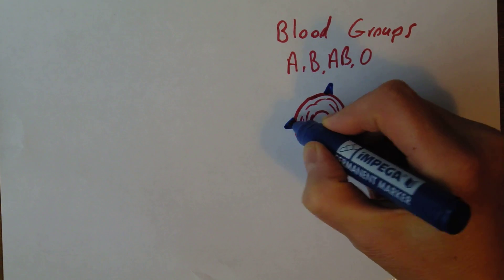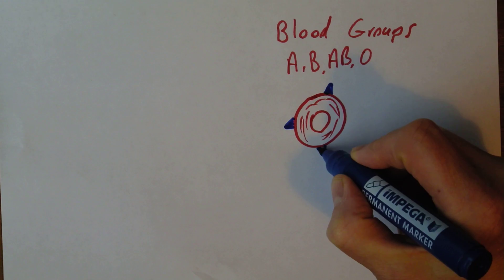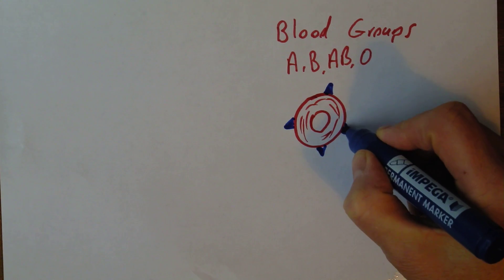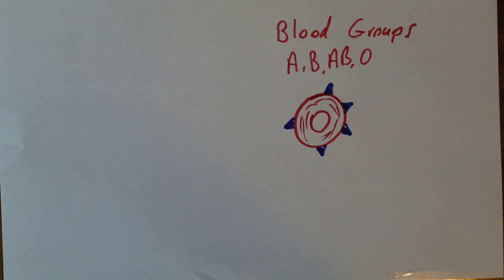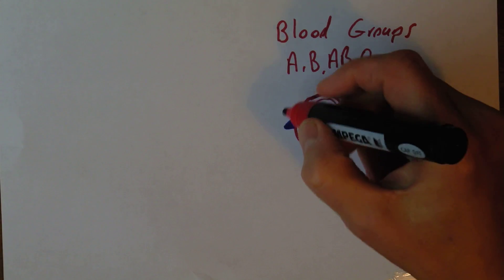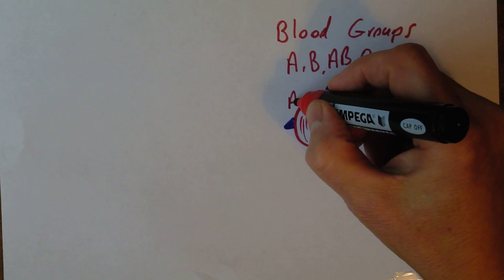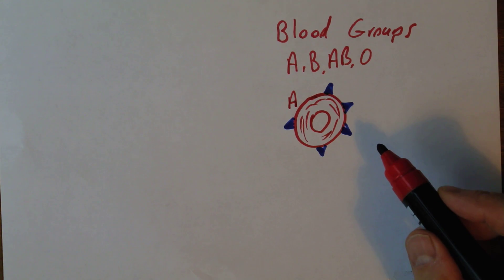These triangular-shaped antigens represent group A. They are particular shaped proteins on the surface of the cell. And the key thing for the purposes of this talk is that these are genetically determined.